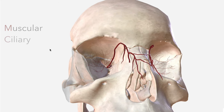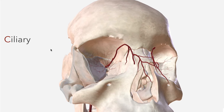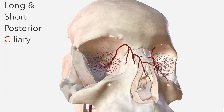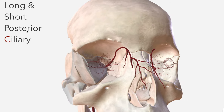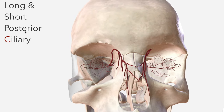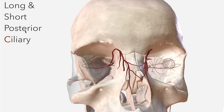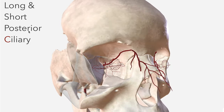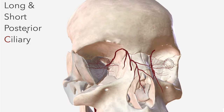Next we have C for ciliary — that is the long and short posterior ciliary arteries. Beginning with the long posterior ciliary arteries, they course along the transverse midline of the globe to contribute to the supply of the iris, as you can see there.